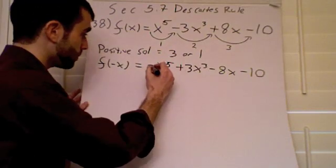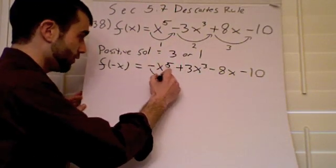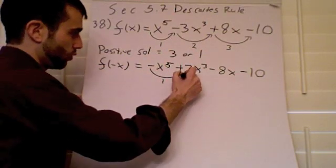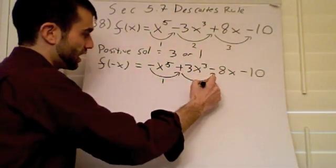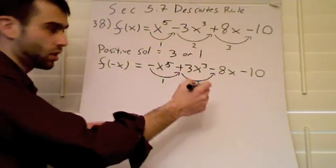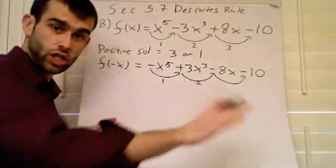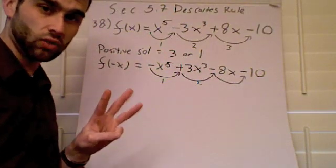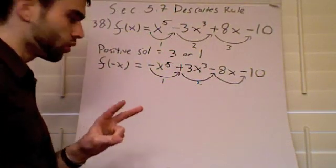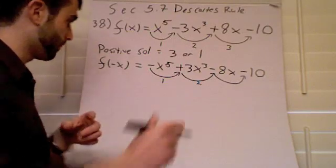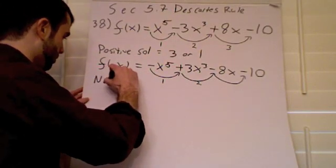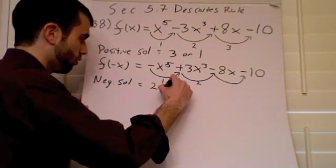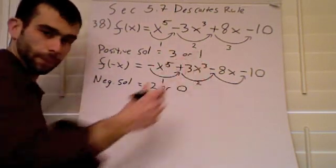Now, let's count the sign changes this time. We're going to go from the first one's a negative to a positive. That's going to be a sign change. That's 1. Second one, go from positive to a negative. That's 2. And a third one, no sign change this time. This is only 2. So negative solutions are going to be 2 or 0.